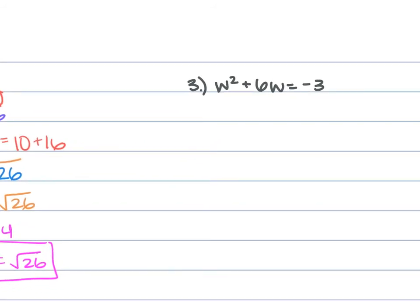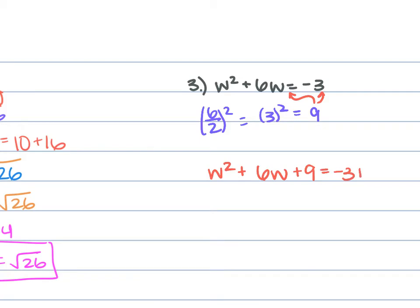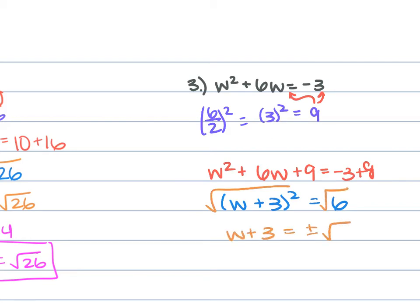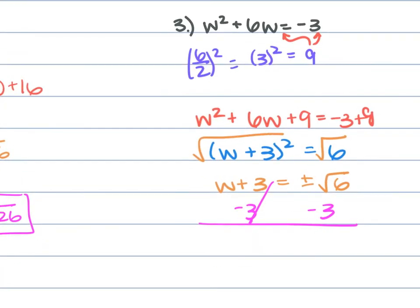For problem 3, we have w squared plus 6w equals negative 3. b is 6, so b over 2 squared: 6 over 2 squared is 3 squared, which is 9. Add 9 to both sides: w squared plus 6w plus 9 equals negative 3 plus 9. This gives w plus 3 squared equals 6. Take the square root: w plus 3 equals plus or minus the square root of 6. Subtract 3: w equals negative 3 plus or minus the square root of 6.